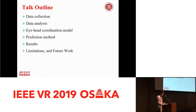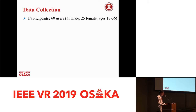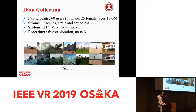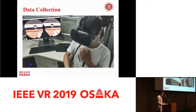In the data collection process, 60 users participated in our experiments. We used seven indoor and outdoor scenes as our stimuli. The scenes are static and soundless. We utilize HTC Vive to display our scenes and an eye tracker to record users' real-time gaze positions. In the experiments, users are asked to freely explore the scenes and are given no task. We collect the real-time scenes viewed by the observers, their gaze positions, and their head poses. Here is a short video showing our experiment environment and the data collection process.